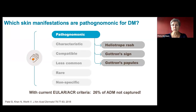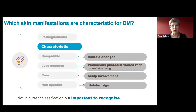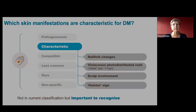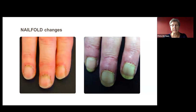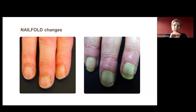If we only rely on those three pathognomonic signs, we will miss many patients with dermatomyositis. It is very important to know the characteristic signs, including nail fold changes. These include periungual erythema — redness and slight swelling around the nail — periungual telangiectasias, which are dilated small vessels visible to the naked eye, and thickening and ruffling of the nail cuticle, which is quite typical in dermatomyositis.